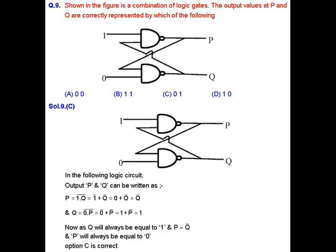JAM Physics JTP 2017, question number 9. We have been given a figure which is a combination of two logic gates. The output values at P and Q are correctly represented by which of the following options? In the following logic gate, output P can be written as P equals (1 · Q) bar, as it includes two inputs 1 and Q and it is a NAND gate.